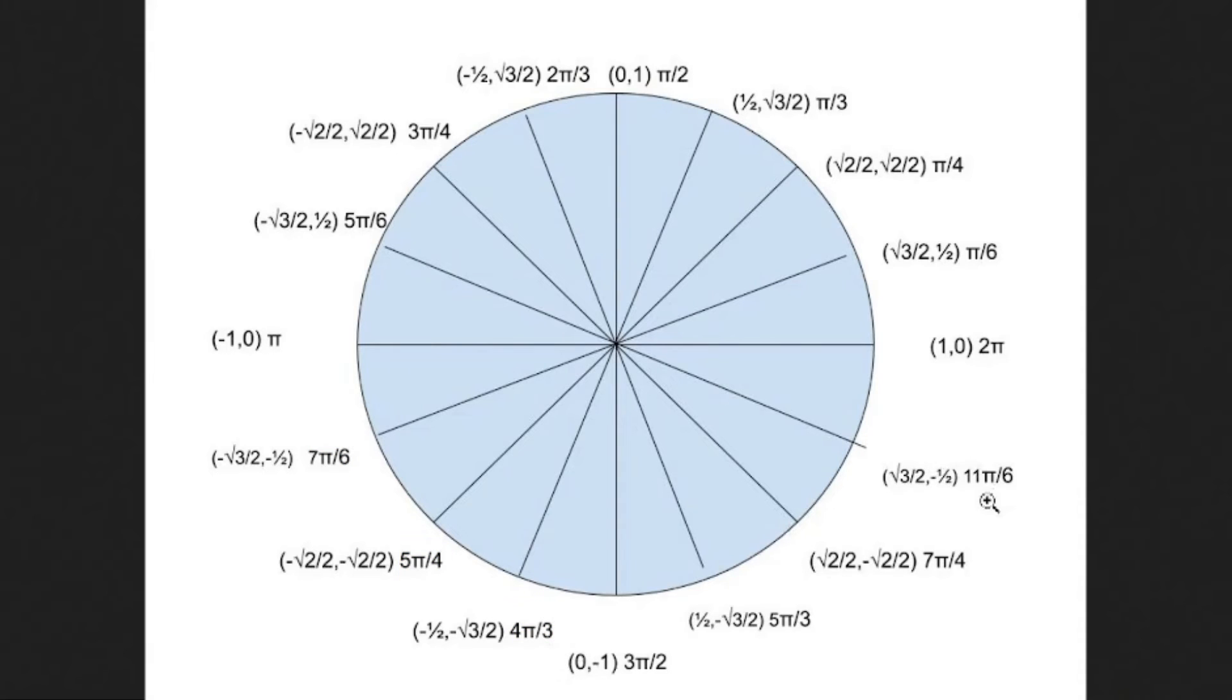And then for your last quadrant, your fourth quadrant, there is still a pattern. You double the denominator. Three times two is six, and then you subtract one. So that's how you get five. Four times two is eight, and then you get seven by getting rid of one. Six times two is twelve, minus one is eleven.